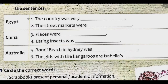Egypt. Number one: the country was very... Number two: the street markets were... China. Number three: places were... Number four: eating insects was...